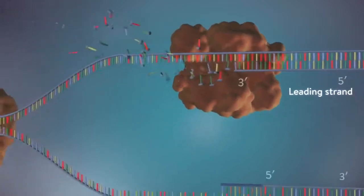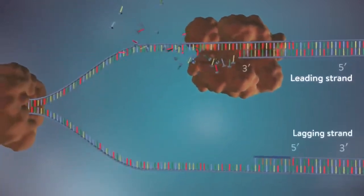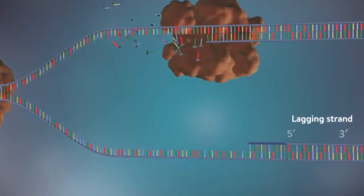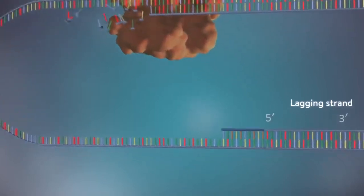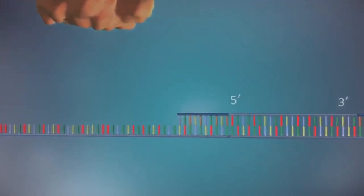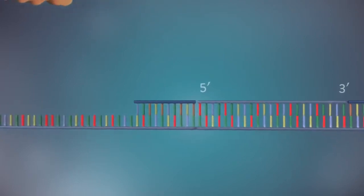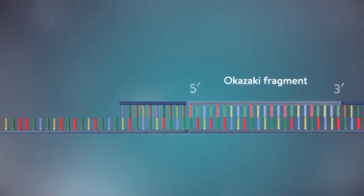The other strand, the lagging strand, cannot be made in this continuous way because it runs in the opposite direction. The DNA polymerase can therefore only make this strand in a series of small chunks called Okazaki fragments.